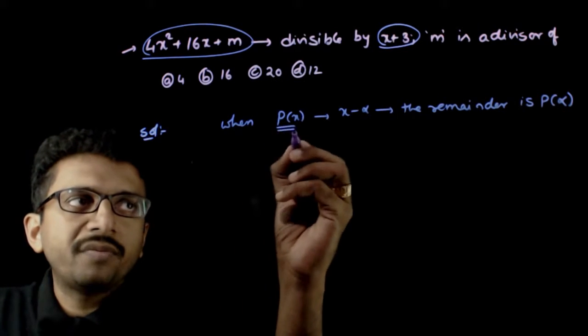And what does factorization theorem say? If x minus alpha is a factor of P of x, then P of alpha is equal to zero. So if x minus alpha is a factor of P of x, then P of alpha is equal to zero.